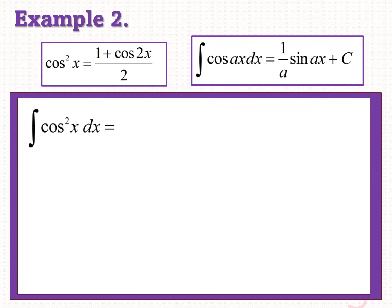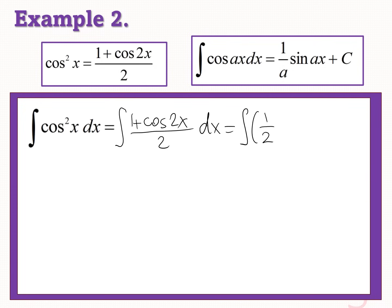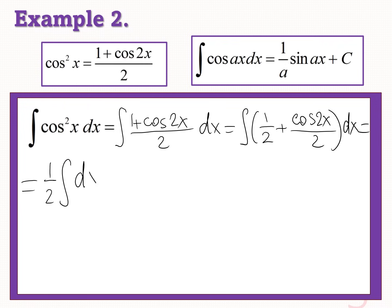The second example. We will follow the same approach. We can write the integrand cos²x as (1 plus cos2x) over 2 dx. Now we can write our integrand as the sum of two fractions: 1/2 plus cos2x/2 dx. According to the property of integrals, we write this as (1/2)∫dx plus (1/2)∫cos2x dx.